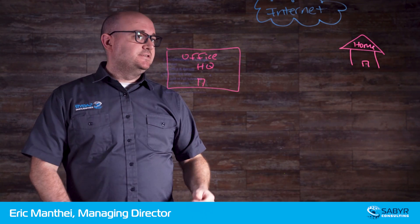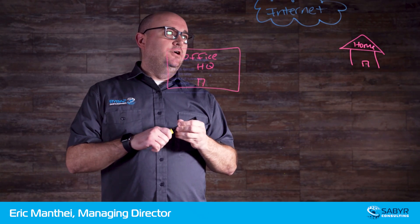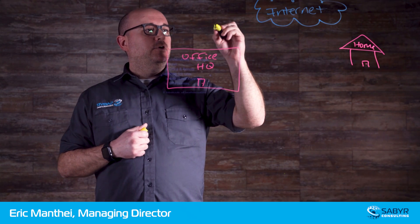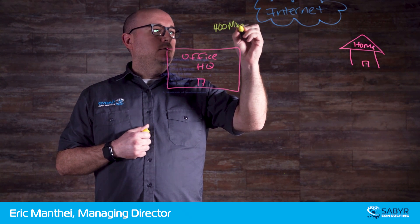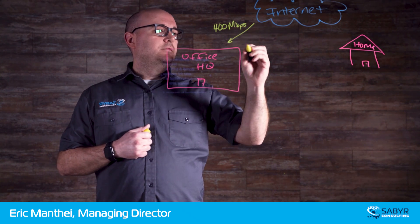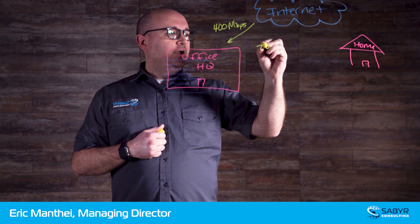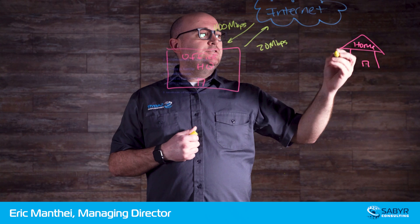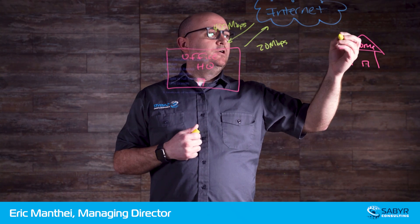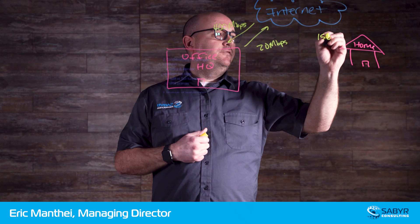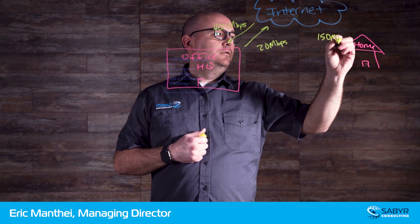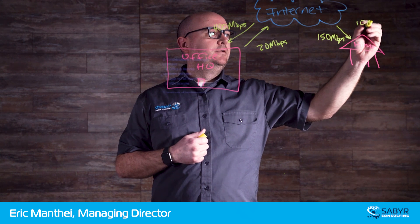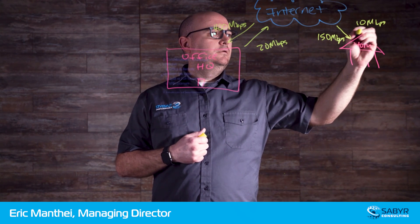Each of these locations has their own internet connection and their own data rates. We'll use one of our customers as an example: they have a 400 meg downlink and a 20 meg uplink. And then we'll use just my home — I have around 150 meg down and I believe 10 meg up.